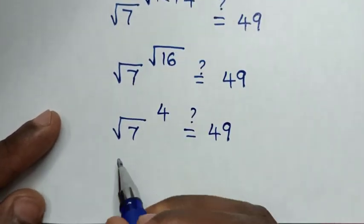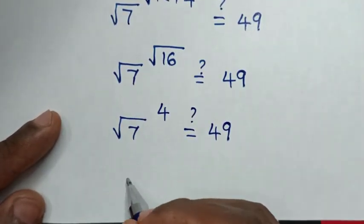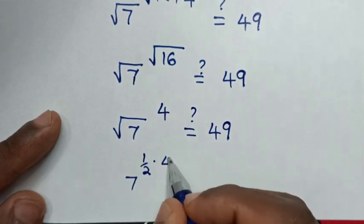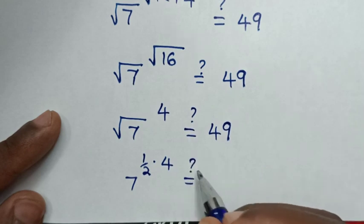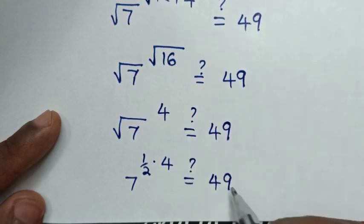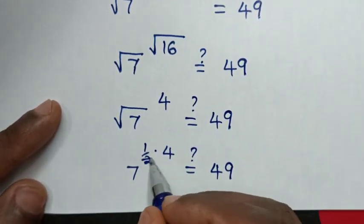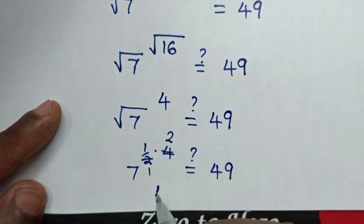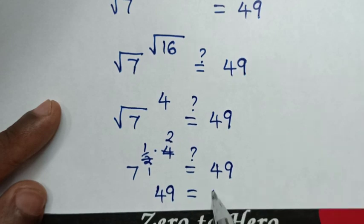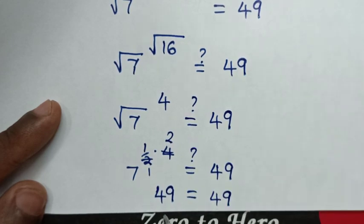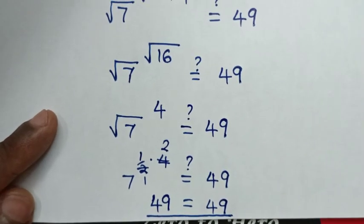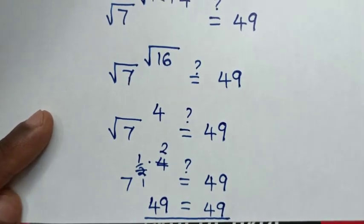From here, square root of 7 is the same as 7 to the power of one half, times the power of 4. To simplify, one half times 4 gives 2, so we have 7 to the power of 2, which is 49 — equal to the right side of 49. Left side and right side are equal, so it is confirmed that x equals 16 is correct.